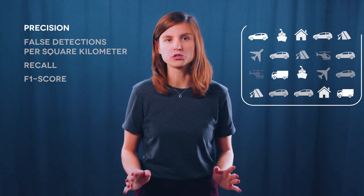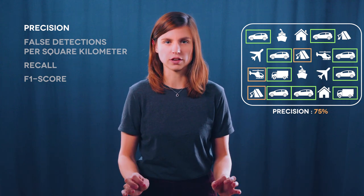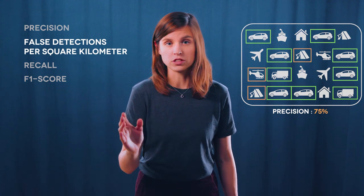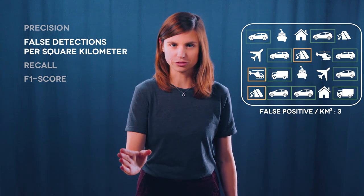The precision, the number of false detections per square kilometer, the recall, and eventually, the F1-score. The precision, if it reaches 100%, means that all our detections are actual vehicles. Otherwise, we are detecting other objects as vehicles.